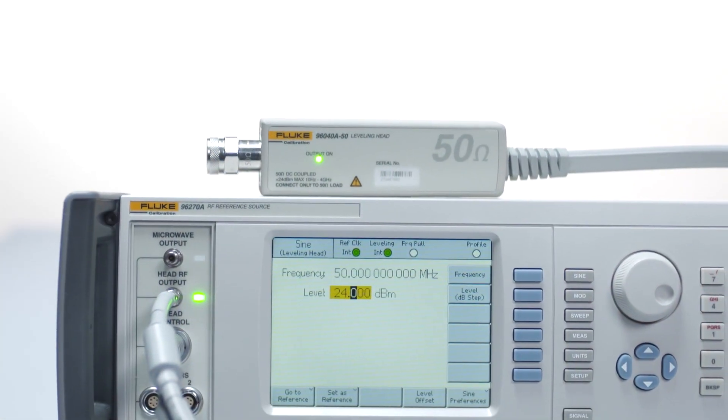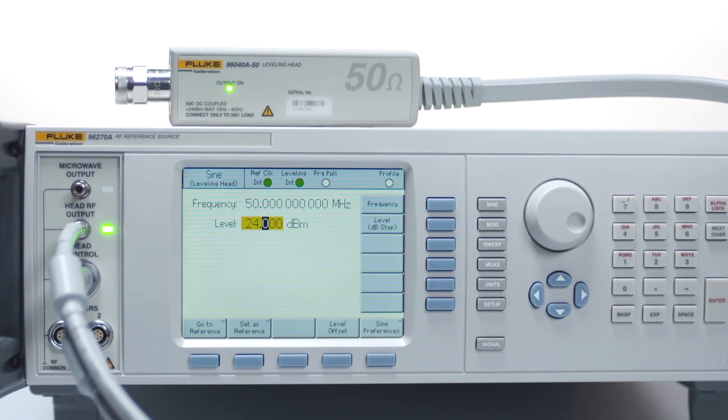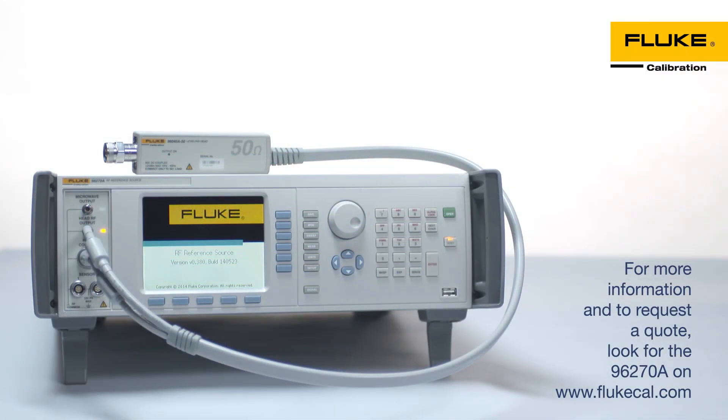With the 96270A 27 gigahertz reference source, RF calibration just became a lot less complex. For more information, visit FlukeCal.com.